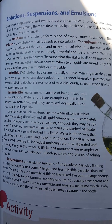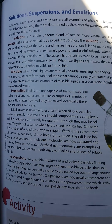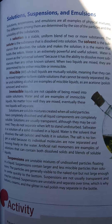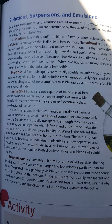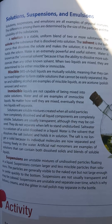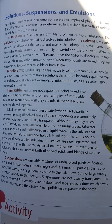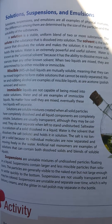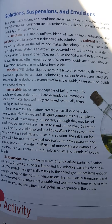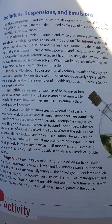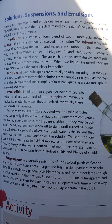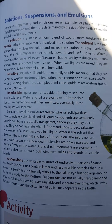Solutions, Suspensions, and Emulsions are all examples of physical mixtures. The difference among them is determined by the size of the particles and the solubility of the substances. A solution is a stable, uniform blend of two or more substances. The solute is the substance dissolved into the solution. The solvent is the substance that dissolves the solute and makes the solution — it is the matrix that holds the solute. Water is an extremely powerful and useful solvent, known as the universal solvent because it has the ability to dissolve more substances than any other known solvent.